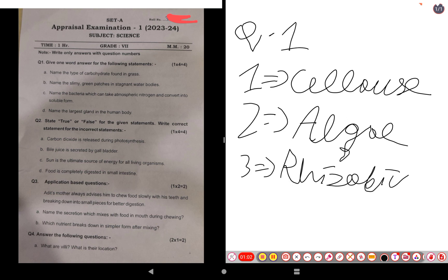And the fourth and final one: name the largest gland in the human body. The largest gland in the human body is the liver.